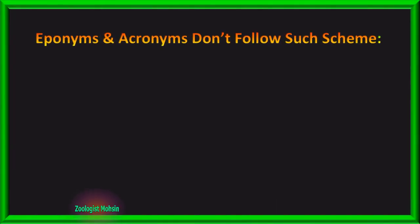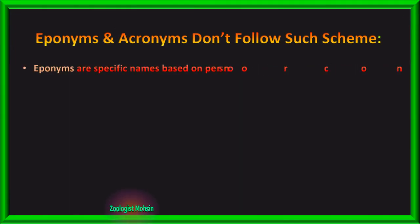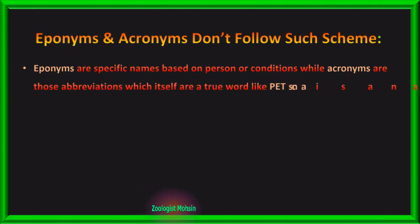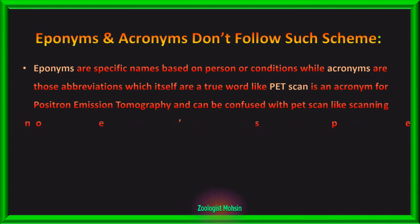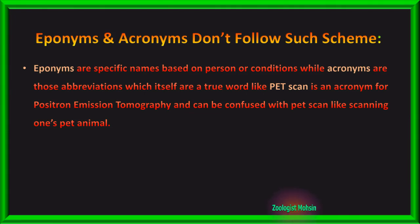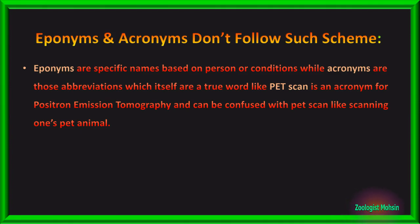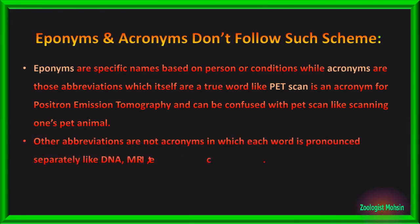What are eponyms and acronyms, and why don't they follow such a scheme? Eponyms are specific names based on a person or condition when giving a scientific name to something. Acronyms are abbreviations which, when abbreviated, form a real word — like PET scan, which is an acronym for positron emission tomography. However, not all abbreviations are acronyms. For example, DNA and MRI are abbreviations where each letter is pronounced separately, not as a word, so they are not acronyms.